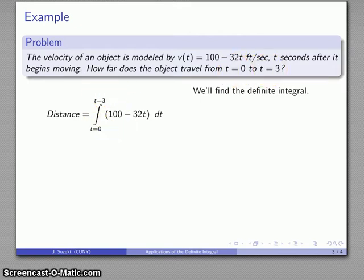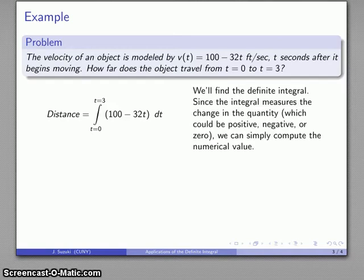Now, if this were an area problem, we'd be concerned that we don't have the right top and bottom curves, because we need to make sure that when we find an area, it turns out to be a non-negative number. However, the definite integral is much more than that—it measures an amount of change, and it's possible for that change to be positive or negative or zero. So we can just compute the actual numerical value of our definite integral.